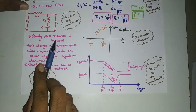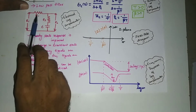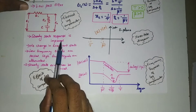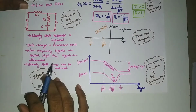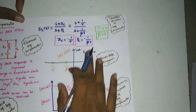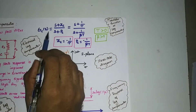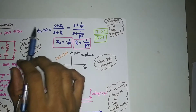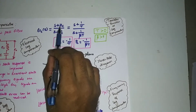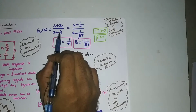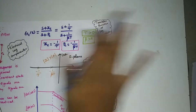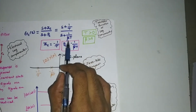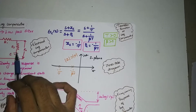The steady state error can be reduced by correct design of the lag compensator. For your plant, R1, R2, and C values should be chosen correctly; then only the steady state response can be improved, otherwise we need to redesign the network. The transfer function of the compensator, Gc(s), is given as (s + 1/T) divided by (s + 1/βT).